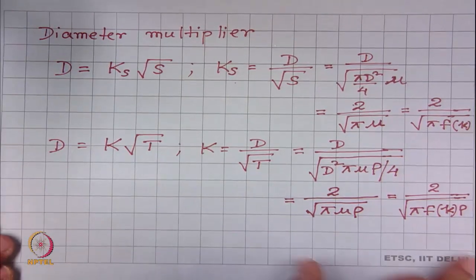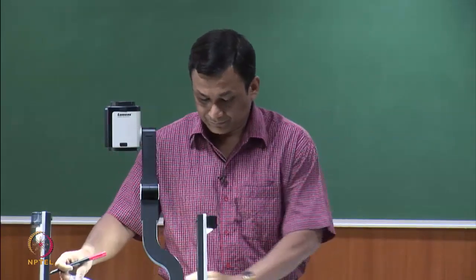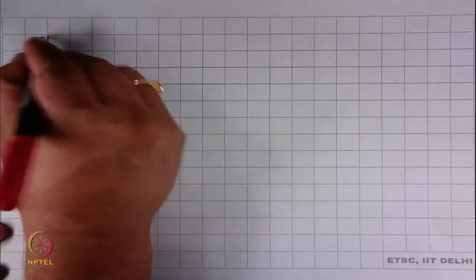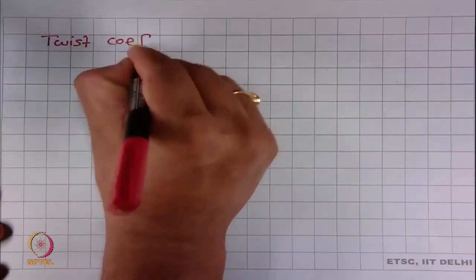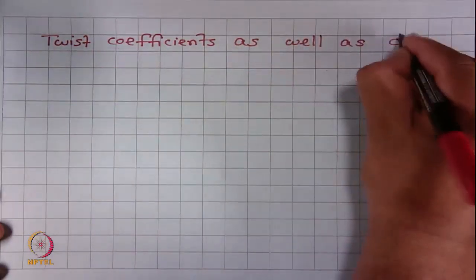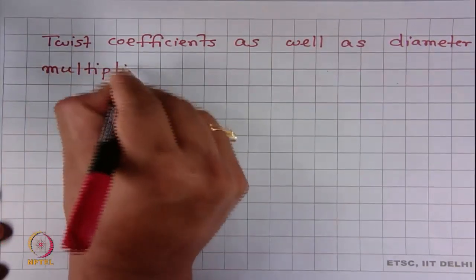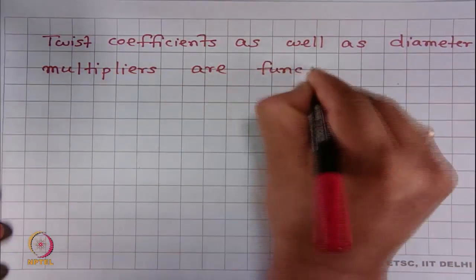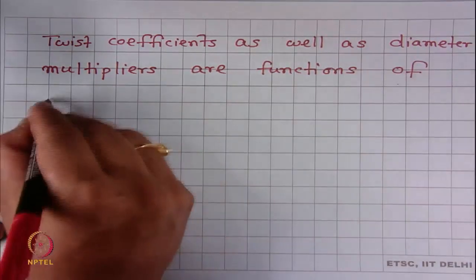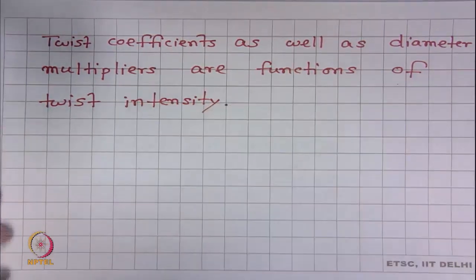To summarize these results: both twist coefficients as well as both diameter multipliers are functions of twist intensity only. This statement is the consequence of Cochrane's first assumption.